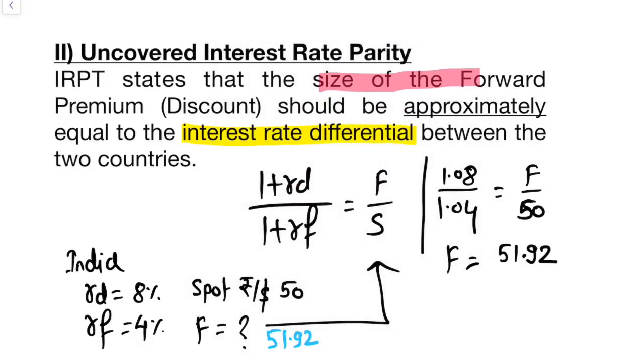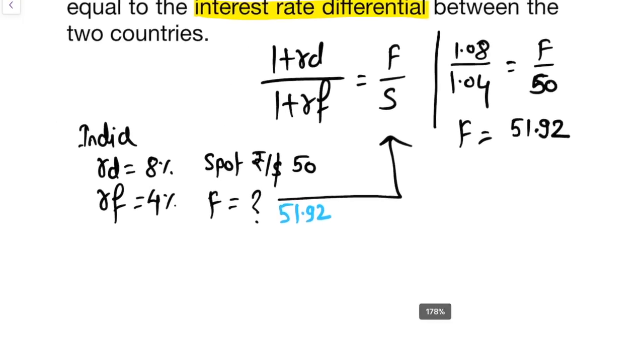Size of the forward premium or discount should be approximately equal to the interest rate differential. So this forward premium discount and the interest rate differential, both should be the same. So how is it?